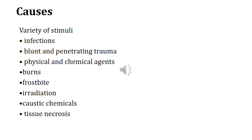Studying the etiology of acute inflammation, it can be caused by a variety of stimuli including infections with viruses or bacteria, immune reactions, chemical or radiation exposure, blunt or penetrating injury, burns, frostbite, irradiation, caustic chemicals, and tissue necrosis or death of tissue. For example, in myocardial infarction, you will observe inflammation in that region — tissue necrosis is one reason for acute inflammation.